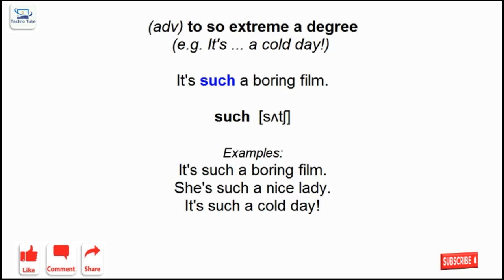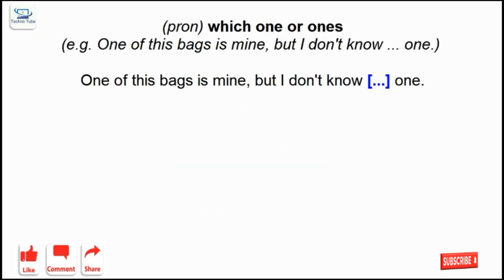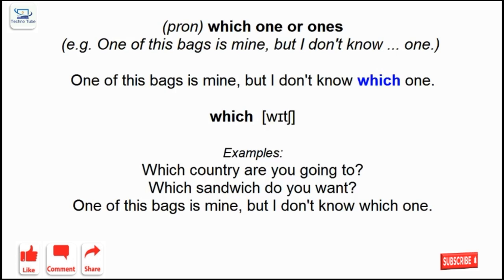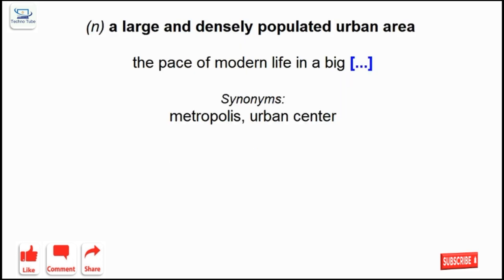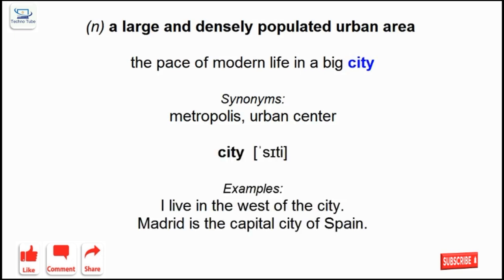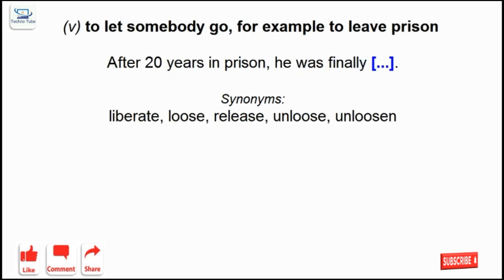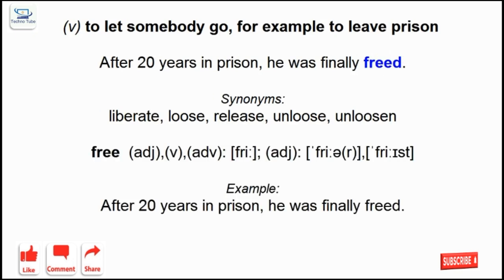Such: to so extreme a degree. Which: which one or ones? City: a large and densely populated urban area. Free: to let somebody go, for example to leave prison.